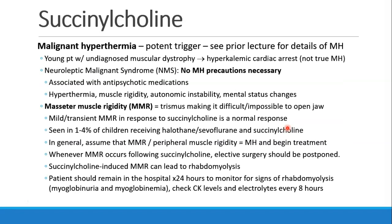Succinylcholine is a known trigger of malignant hyperthermia, as discussed in a previous lecture. There are also other succinylcholine-related events that are not malignant hyperthermia: patients with muscular dystrophy can have a hyperkalemic arrest; patients with neuroleptic malignant syndrome — which looks like MH — can actually receive succinylcholine without problems. Masseter muscle rigidity can occur in response to succinylcholine, and we often take precautions for malignant hyperthermia when we see this.